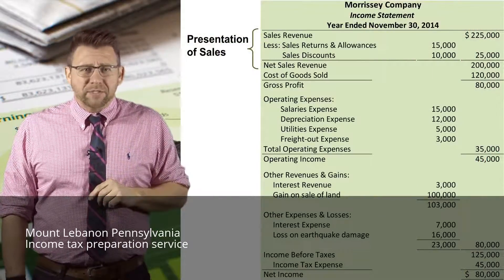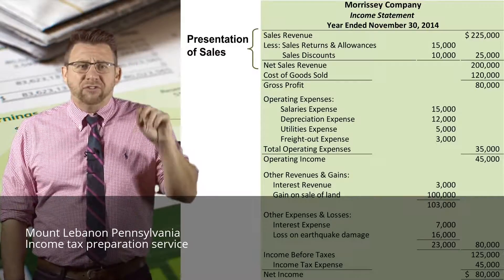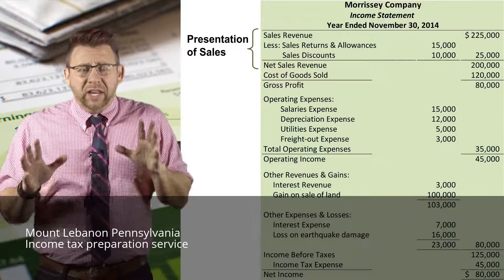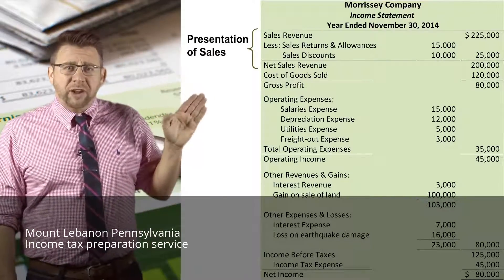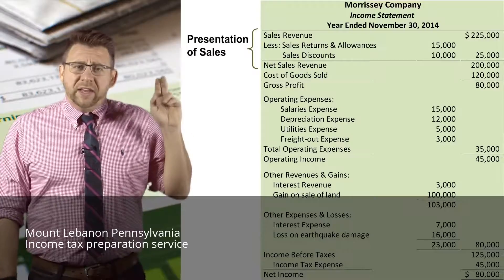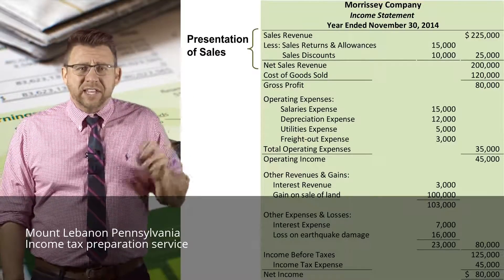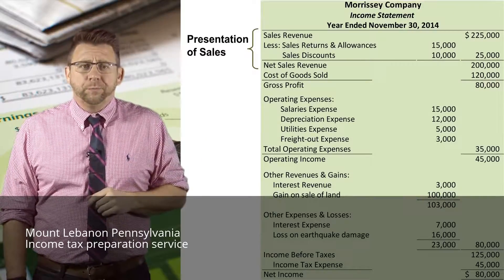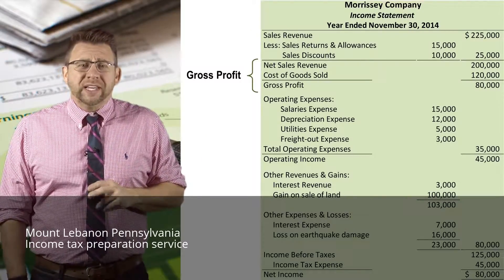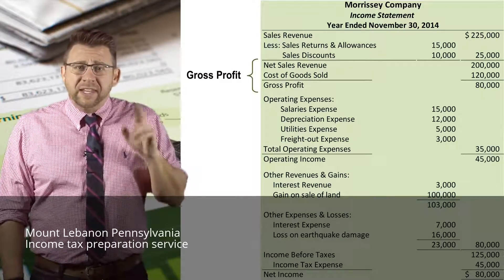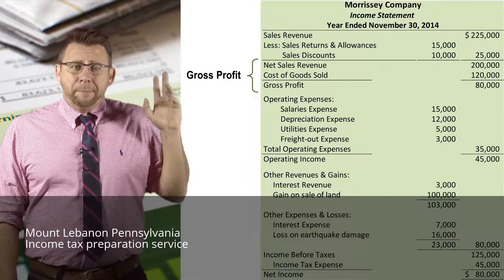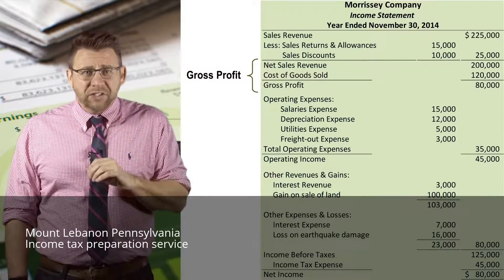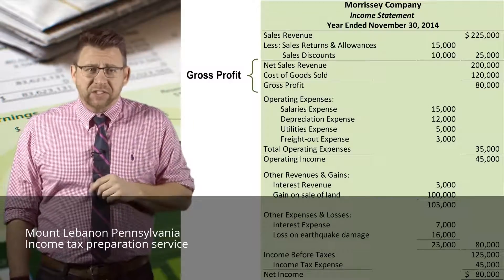The multi-step income statement starts with the calculation of net sales revenue. No other revenue is included in this section. Sales revenue is reported first, then sales returns and allowances and sales discounts are deducted to arrive at net sales revenue. The next important subtotal is gross profit, calculated by taking net sales revenue minus cost of goods sold. At this point, cost of goods sold is the only expense deducted in this section.